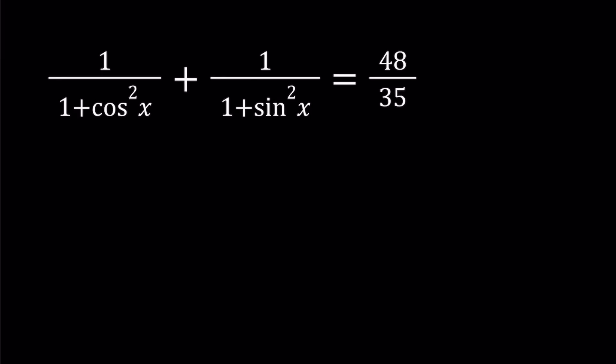Hello everyone. In this video we're going to be solving a trigonometric equation. We have 1 over 1 plus cosine squared x, plus 1 over 1 plus sine squared x, equals 48 over 35. We're going to be solving for x values, and I'll be presenting two methods. Let's start with the first method.